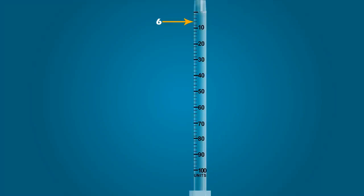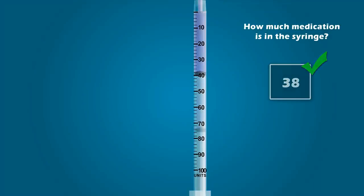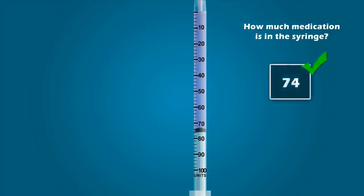Now that you know the value of all the graduation marks, let's determine the amount of medication in the syringe. How much medication is in this syringe? If you stated 38 units, you are correct. One more — how much medication is in this syringe? If you stated 74 units, you are correct.